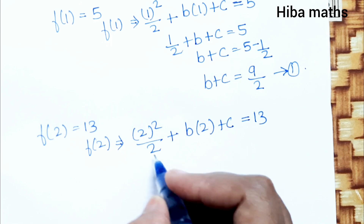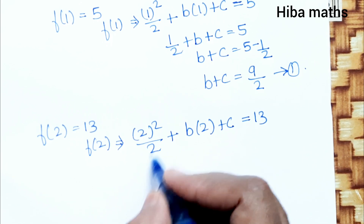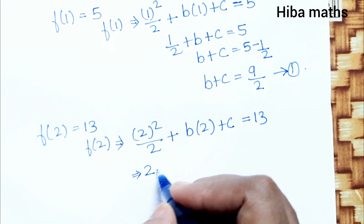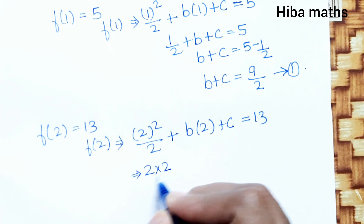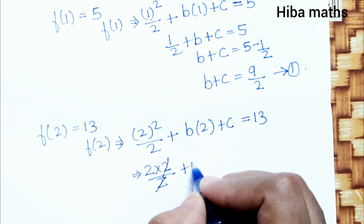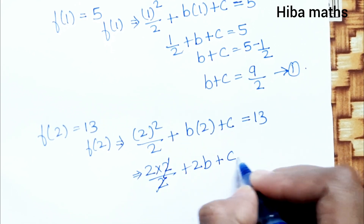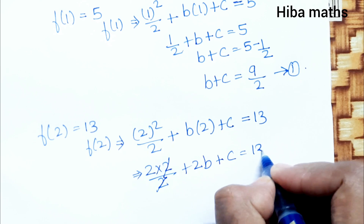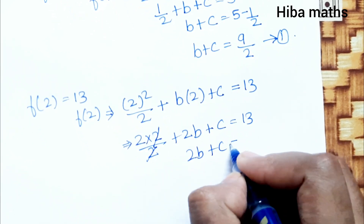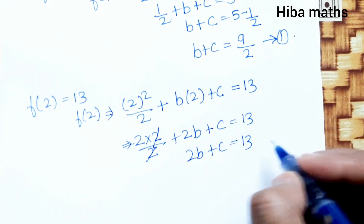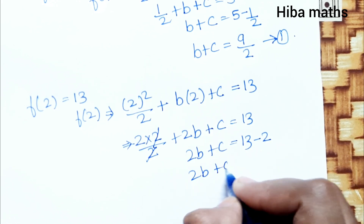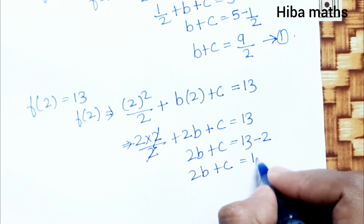2 squared is 4, divided by 2 — the 2s cancel — giving 2. So 2 plus 2b plus c equals 13. Therefore 2b plus c equals 13 minus 2, which gives 2b plus c equals 11. This is the second equation.